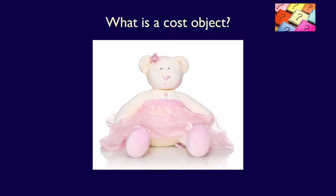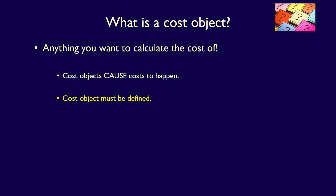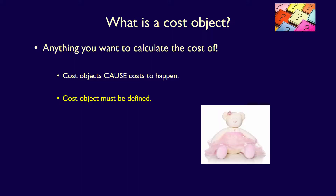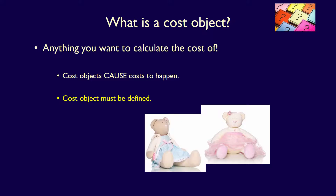In that manufacturing facility, is the dancing bear the only cost object? Absolutely not. Why not? Because cost objects have to be defined. I can change what I define as the cost object, and that would change what costs I need to accumulate. If I define the cost object as the dancing bear, then I would accumulate the costs for manufacturing the dancing bear and nothing else. But if I define my cost object as the stuffed bear production line, then I would have to accumulate all the costs of producing all of the different stuffed bears together — including all of the costs for the dancing bear plus all of the costs for the other bears produced on the same production line. The costs I accumulated changed because of the way I decided to define the cost object.